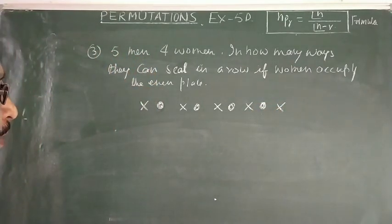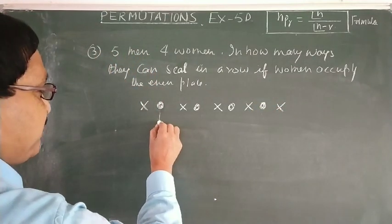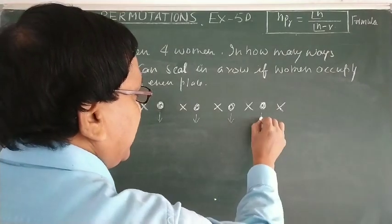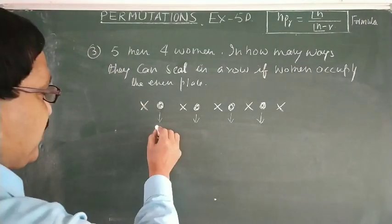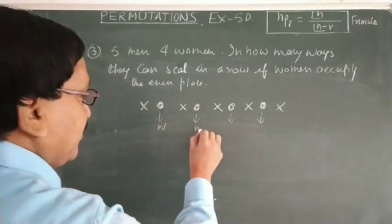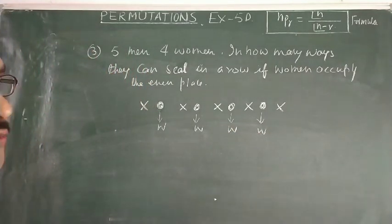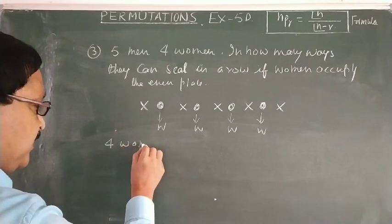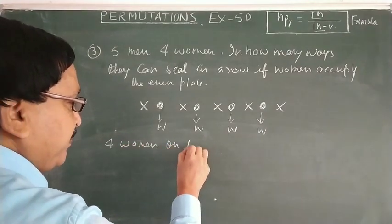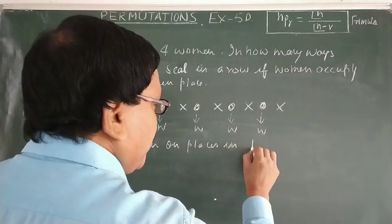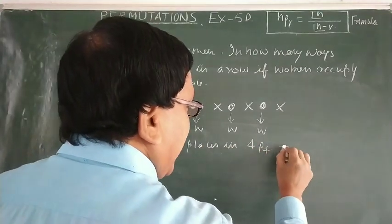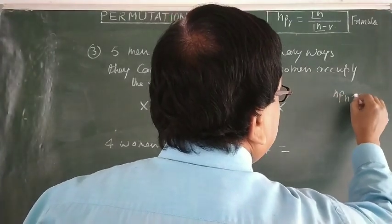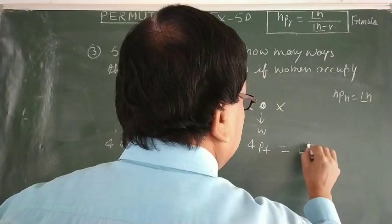There are 5 places for men and the even places (2nd, 4th, 6th, 8th) are for women. So 4 women can sit on 4 even places in 4P4 ways. Since nPn = n!, this equals 4!.